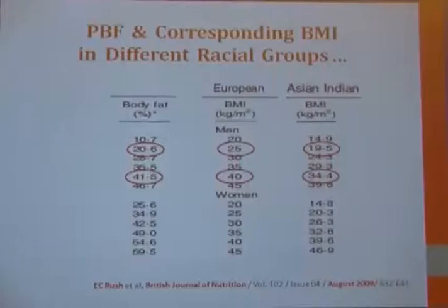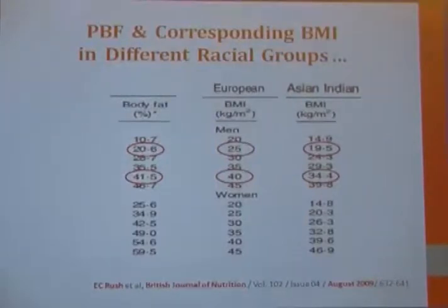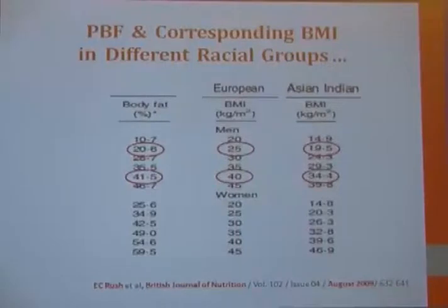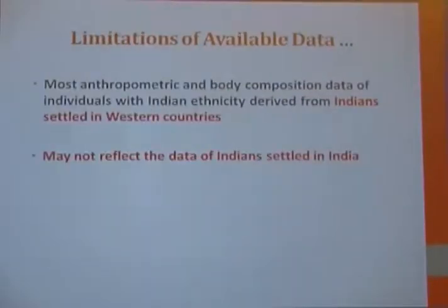For a given body fat percentage — say 20.6% — one European may have a BMI of 25, while one Indian will have only 19.5. Similarly, all BMI categories may reflect lower values for Indians at the same level of percent body fat. A limitation of available data is that much of it has been collected from Indians settled in Western countries, which may not reflect the data for Indians residing in India.